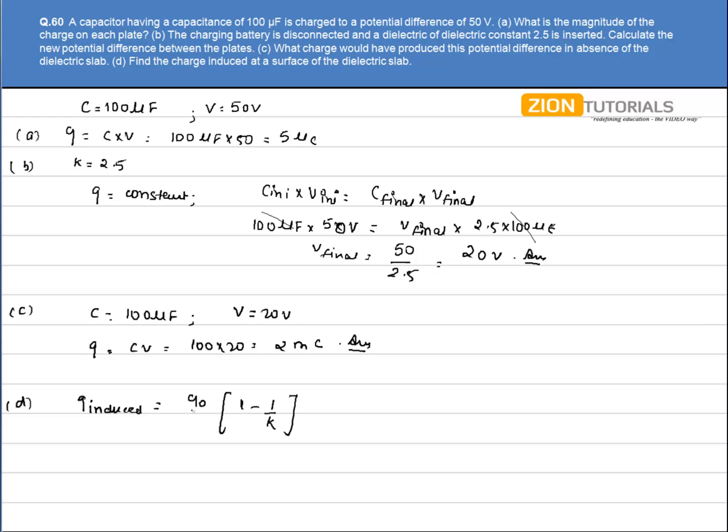Where Q₀ is the charge on the surface of the plate. We have the charge on the surface of the plate as 5mC. So we have 5 times (1 minus 1/2.5). On solving this, we get the answer as 3mC.